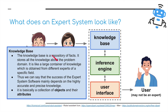Finally, the knowledge base is the repository — basically the database of facts. It stores all the knowledge about the problem domain. It is like a large container of knowledge, similar to Wikipedia, obtained from different experts of a specific field. The success of the expert system mainly depends on the highly accurate and precise knowledge within it. It is essentially a collection of objects and their attributes, similar to a database.